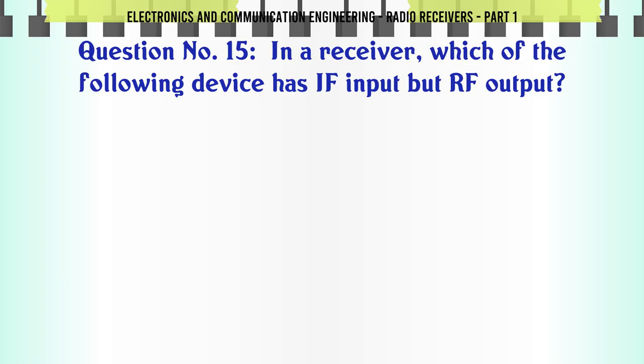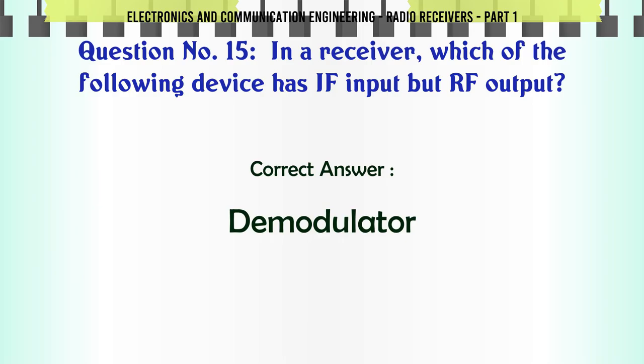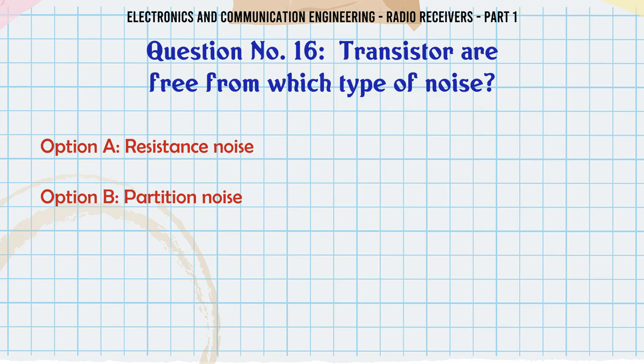In a receiver, which of the following devices has IF input but RF output? a. Demodulator. b. Loudspeaker. c. Audio amplifier. d. Frequency changer. The correct answer is demodulator.